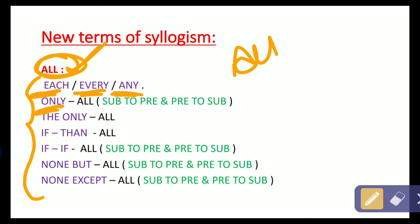If your statement begins with 'only', it also represents 'all', but with one additional condition — the subject changes to predicate and the predicate changes to subject. If your statement begins with 'the only', it simply means 'all' without any swap. If your statement or conclusion carries 'if-then' (i.e., if A then B), it means all A are B — so 'if-then' again represents 'all'.